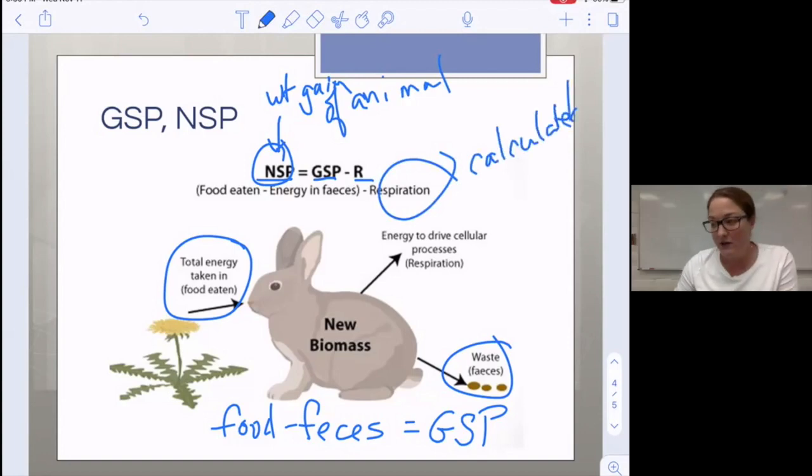Now you're going to take a look at a video that summarizes the two calculations, the difference between primary and secondary productivity, gross and net.